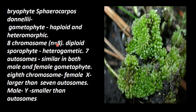In the haploid gametophytic stage, seven autosomes are similar in both male and female gametophyte. In the gametophytic stage, there are eight chromosomes in male and female, so seven of them are autosomes. The eighth chromosome, if it is female, has got X — it is larger than the seven autosomes.